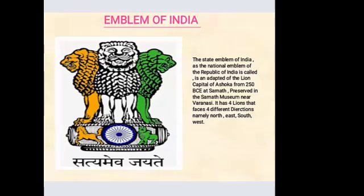We also studied the emblem of India. The state emblem of India, also the national emblem of the Republic of India, is an adaptation of the Lion Capital of Ashoka from 250 BC at Sarnath, preserved in the Sarnath Museum near Varanasi. It has four lions facing four different directions: north, east, south, and west.